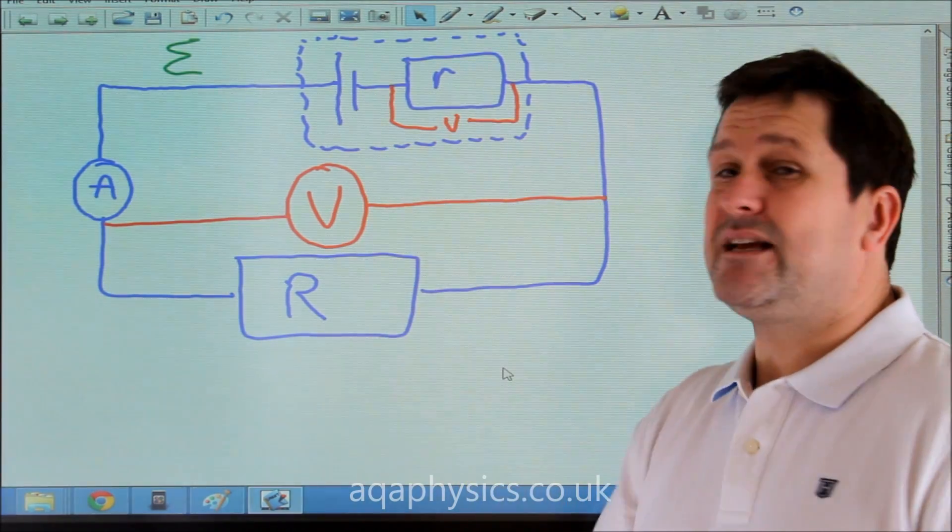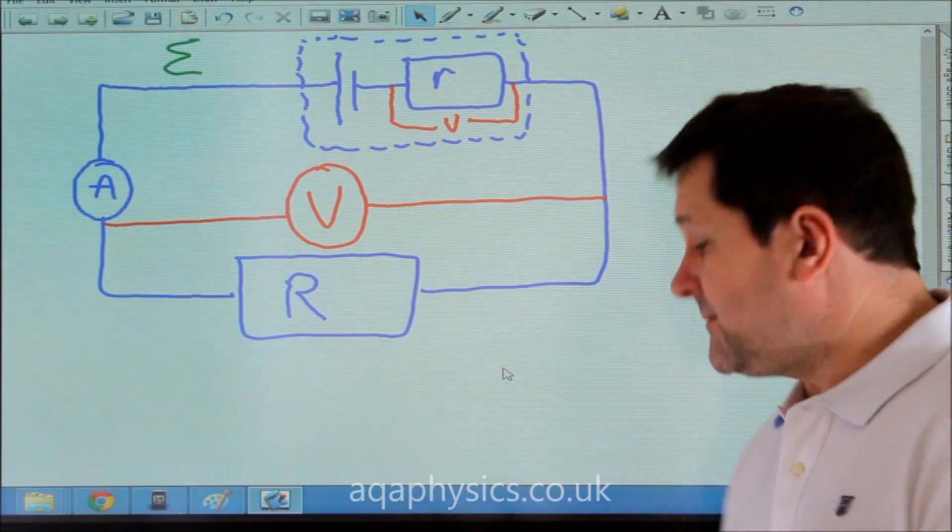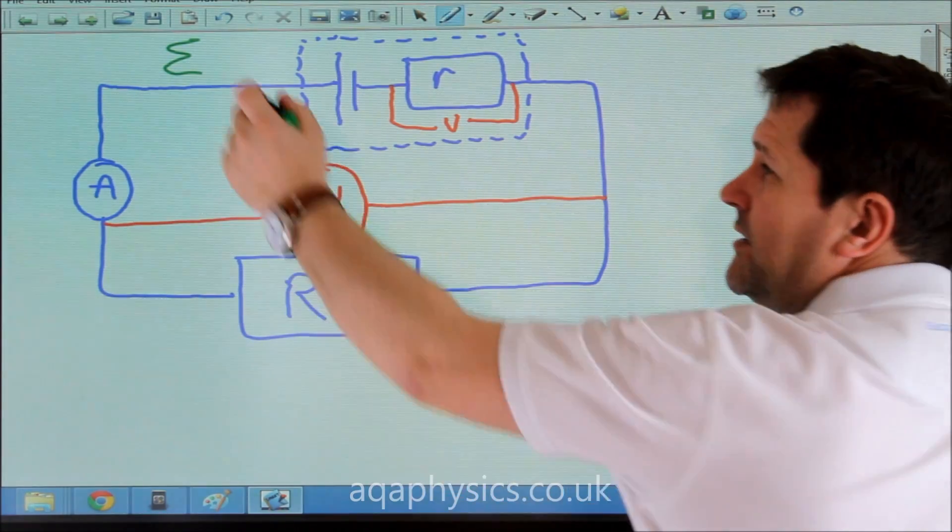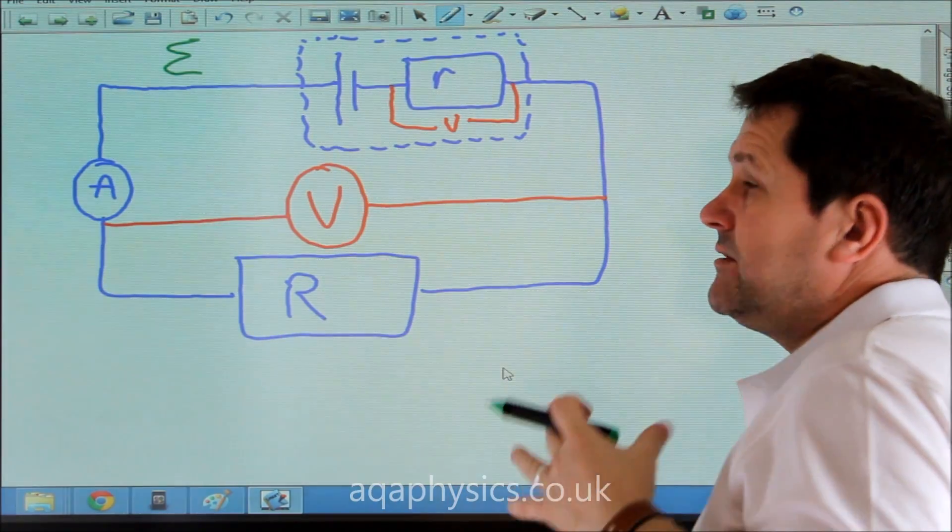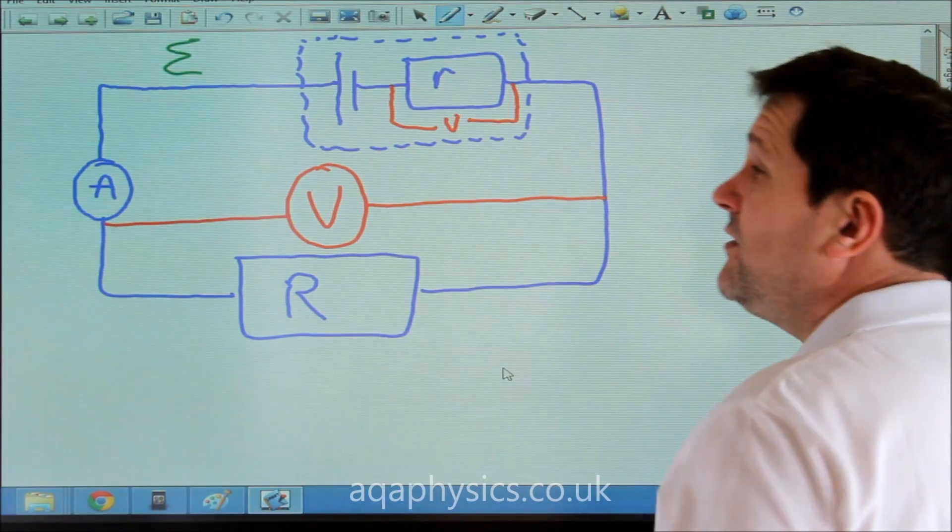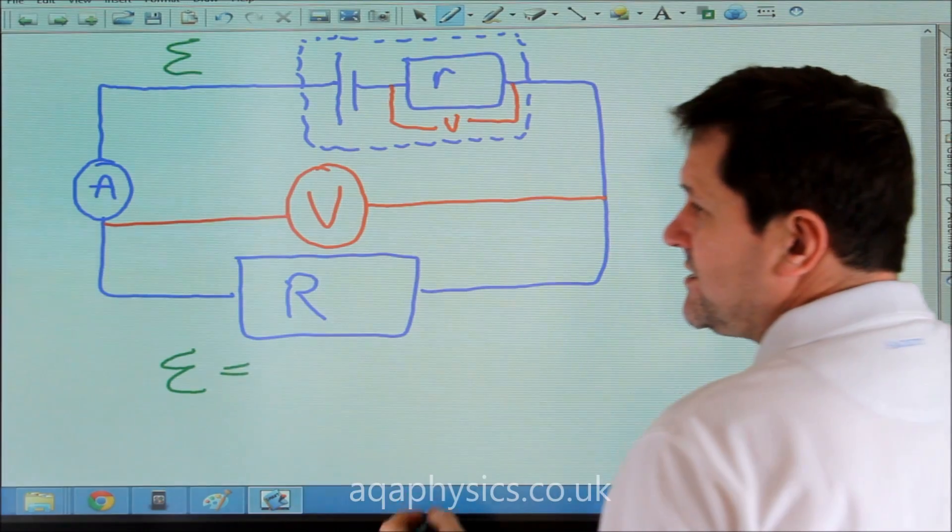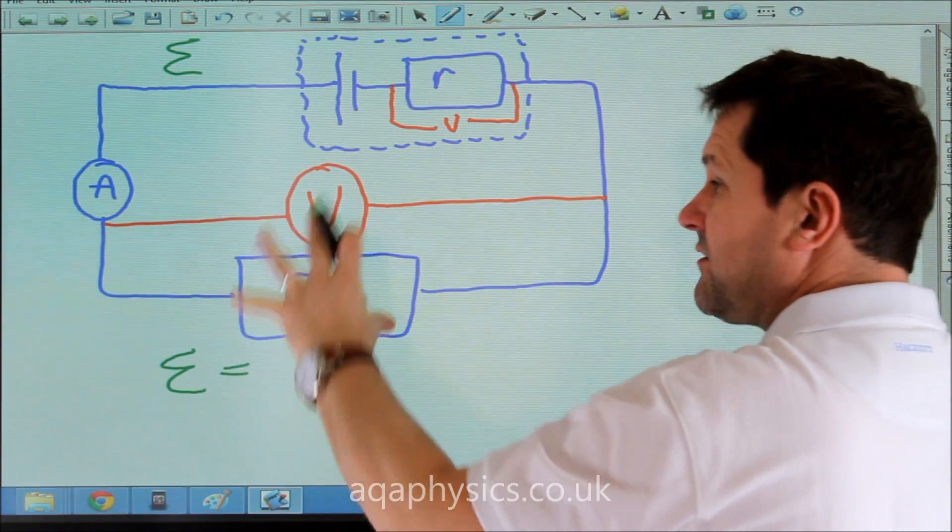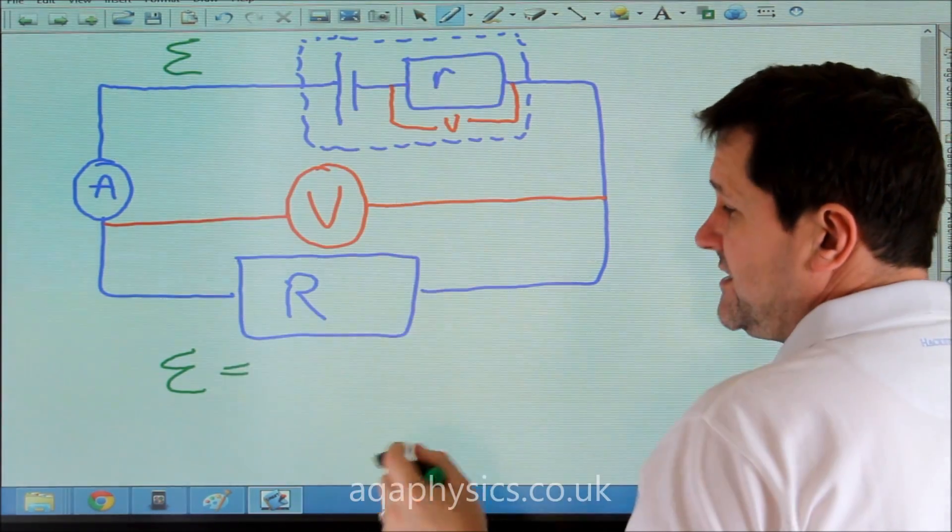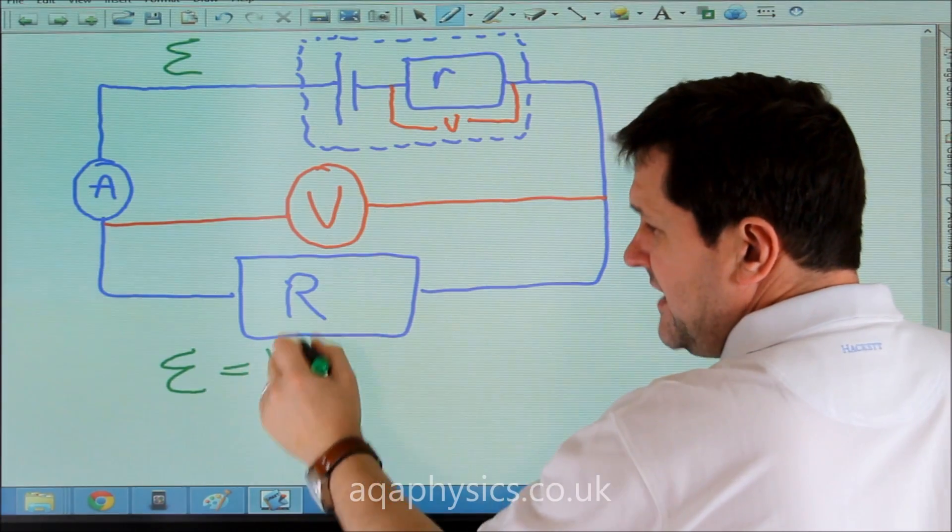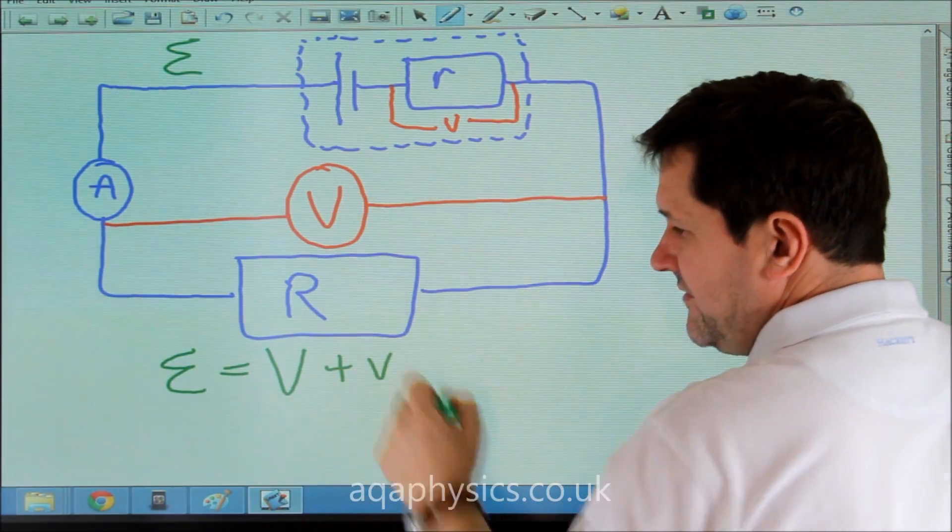This is the beginnings of EMF and internal resistance. So if we use our laws of voltage, we know that the energy coming into the circuit, the EMF, equals the potential difference across our load resistance and our internal resistance. That's big V plus little V.